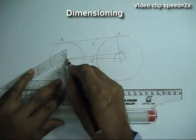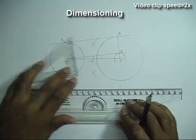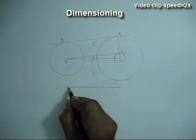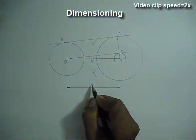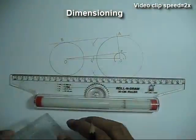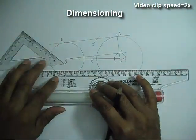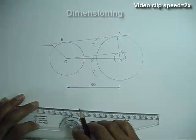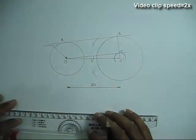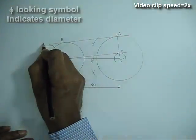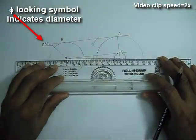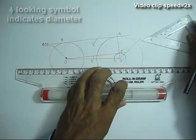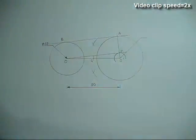Now we do the dimensioning. The distance between the two centers is 90 mm. The radius of the smaller circle on the left is 30 mm, so the diameter is 60 mm — we write phi 60. The symbol phi represents diameter. The larger circle on the right has a radius of 40 mm, so we write phi 80. 80 is the diameter.